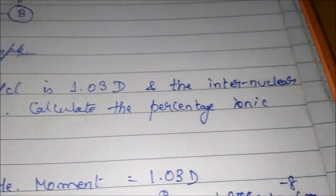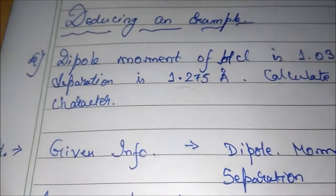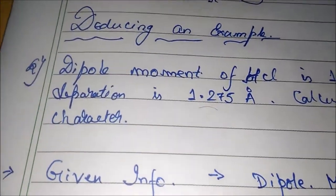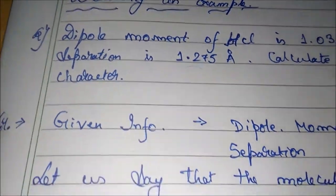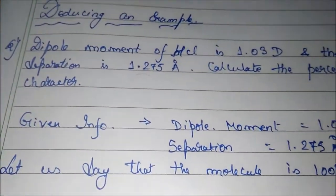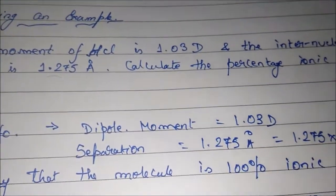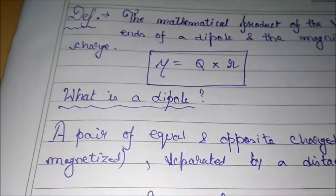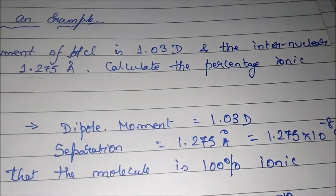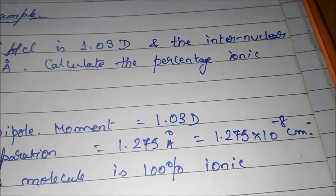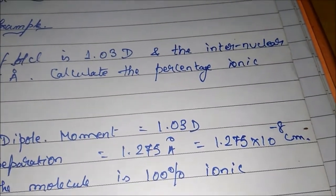So let us move without any problem. The information we have are that the dipole moment is 1.03 D. The separation distance, r (we have discussed here in the formula), is 1.275 Angstrom. In CGS scale, it is equal to 1.275 × 10^-8 centimeter.